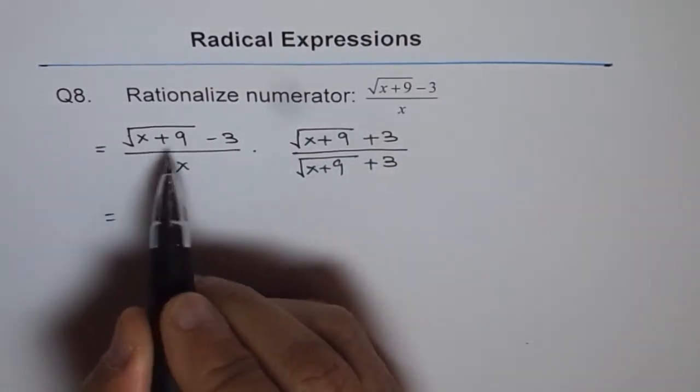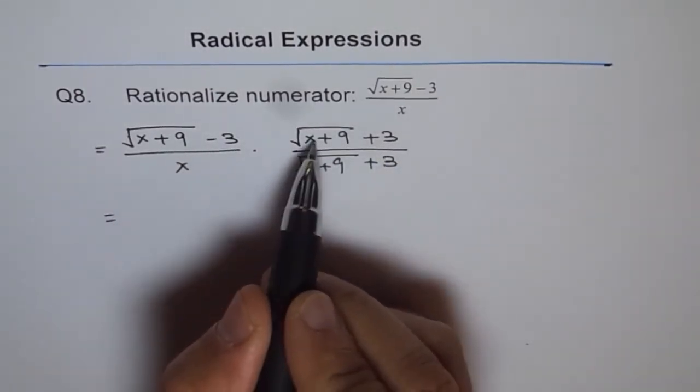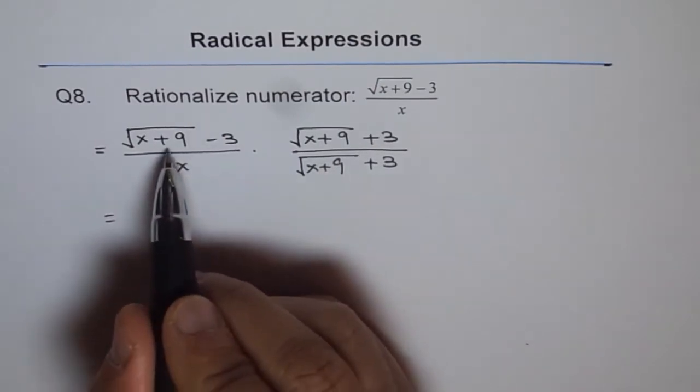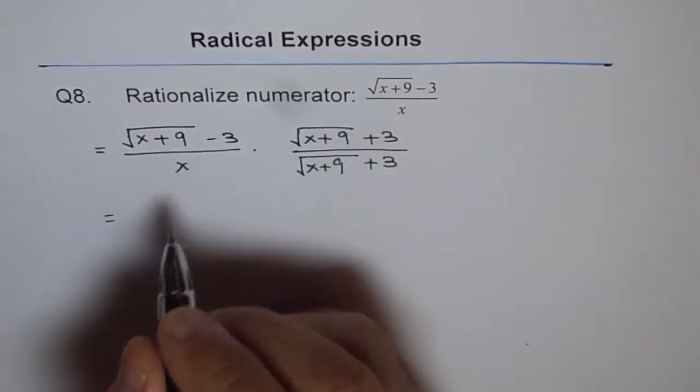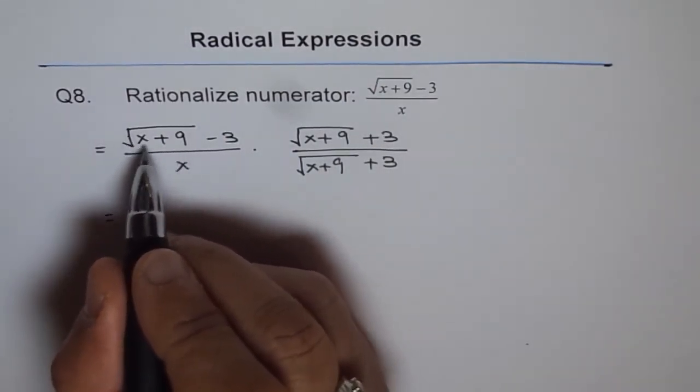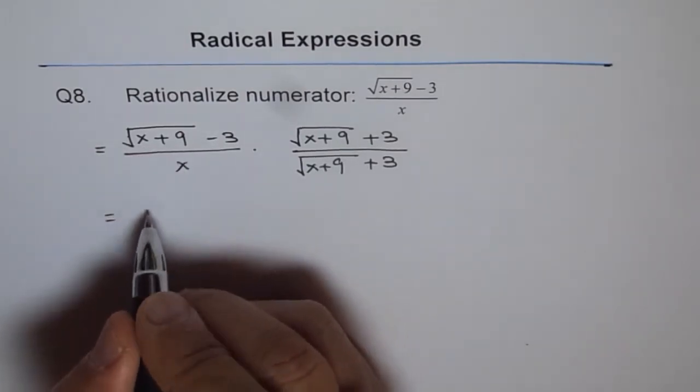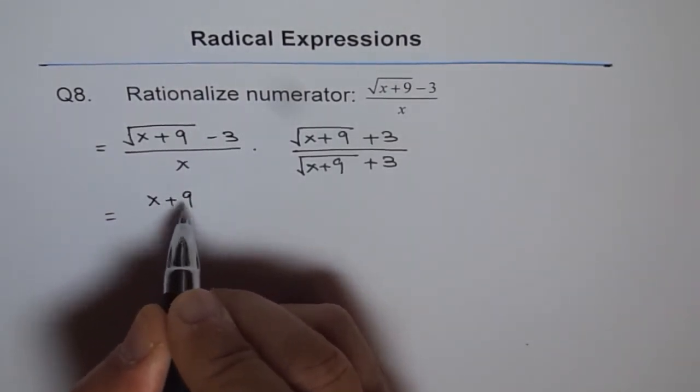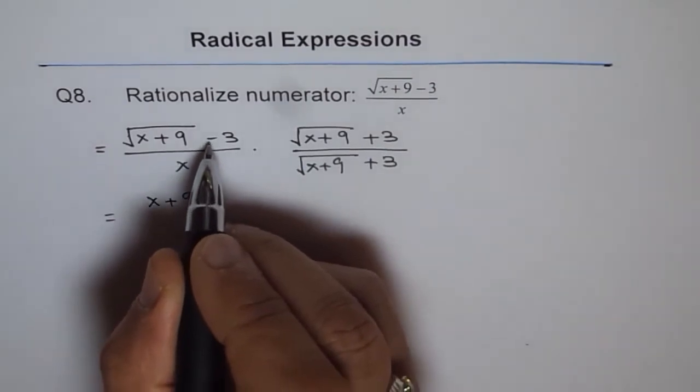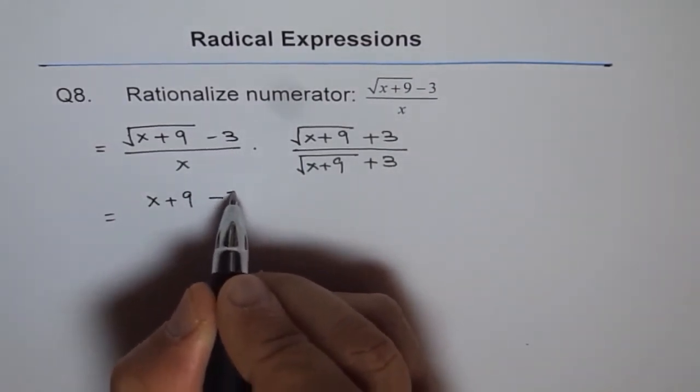The numerator is like a minus b times a plus b, so it becomes a square minus b square. Square of square root is the term itself, which is x plus 9 here. x plus 9 minus 3 square, which is 9.